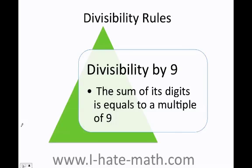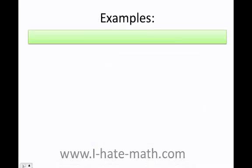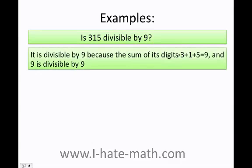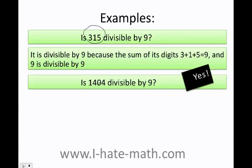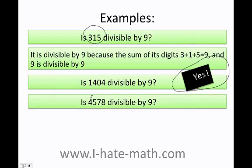Divisibility by 9 works just like divisibility by 3 — the sum of the digits must equal a multiple of 9. Is 315 divisible by 9? I add the digits: 3 plus 1 is 4, 4 plus 5 is 9. Yes, if I divide 315 by 9 I get remainder 0. Is 1,440 divisible by 9? 1 plus 4 is 5, 5 plus 4 is 9, so yes. What about 4,578? 4 plus 5 is 9, 9 plus 7 is 16, 16 plus 8 is 24 — since 24 is not divisible by 9, the answer is no.